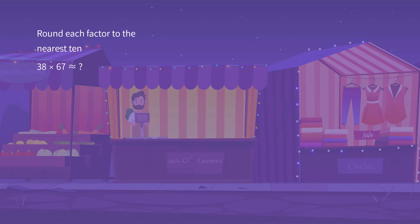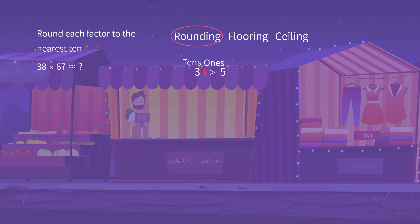We have discussed rounding, flooring, and ceiling before. Here we do the rounding. For 38, we compare 8 with 5. Since 8 is greater than 5, we add 1 on the tens place and omit the ones place.